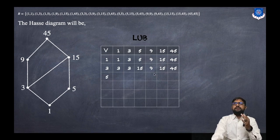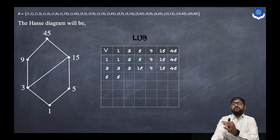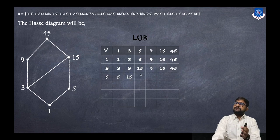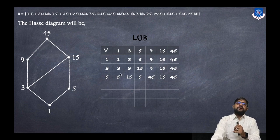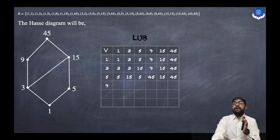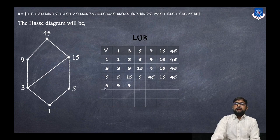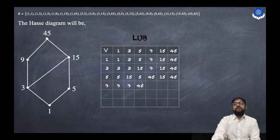For 5: LUB(5,1)=5, LUB(5,3)=15, LUB(5,5)=5, LUB(5,9)=45, LUB(5,15)=15, LUB(5,45)=45. Since 45 is the upper bound of the whole graph, the entire column for 45 is 45. For 9: LUB(9,1)=9, LUB(9,3)=9, LUB(9,5)=45, LUB(9,9)=9, LUB(9,15)=45, LUB(9,45)=45.